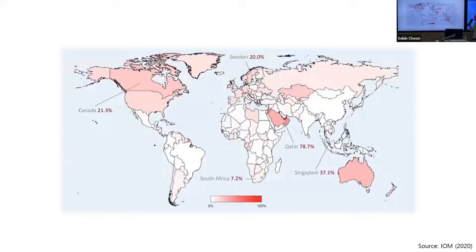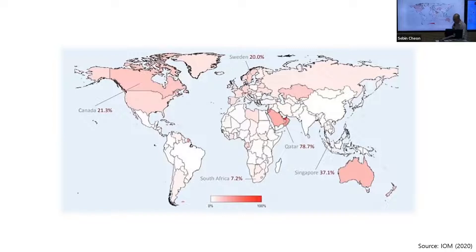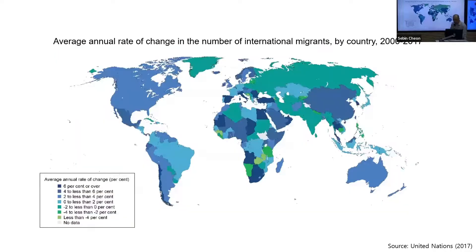This interesting world map shows some popular destinations for international migrants, including Canada, Sweden, Qatar, Singapore, and Australia. In addition to those popular destinations, there are some newly emerging destinations — some dark blue countries on the map — and Korea is actually one of them.